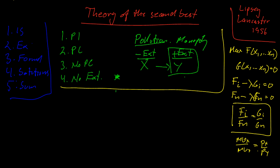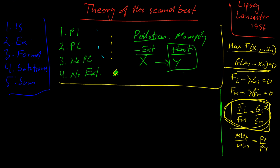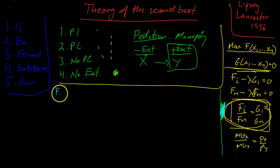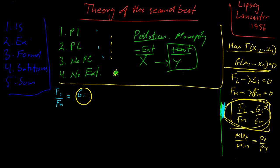Now let's assume one condition is not satisfied — there's an externality and no way to fix it with a tax, subsidy, or anything. We just have to accept that constraint. To formalize this, we write down that one condition cannot hold: f1/fn = k times g1/gn, where k is not equal to 1. So we introduce this as an additional constraint in the problem.